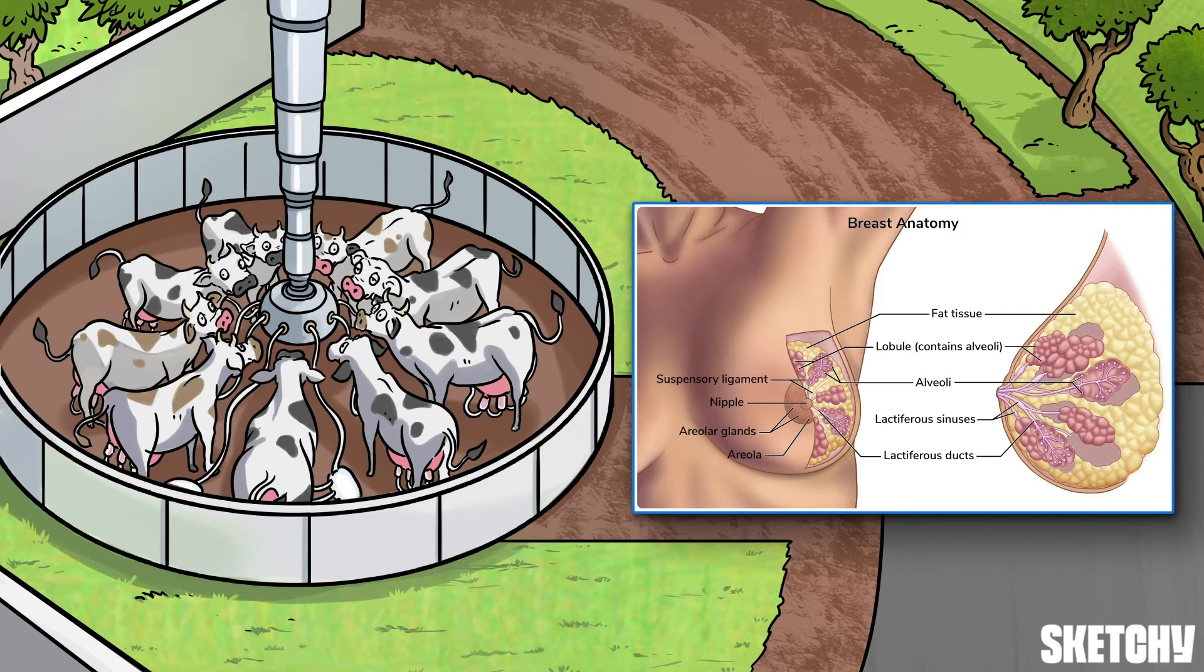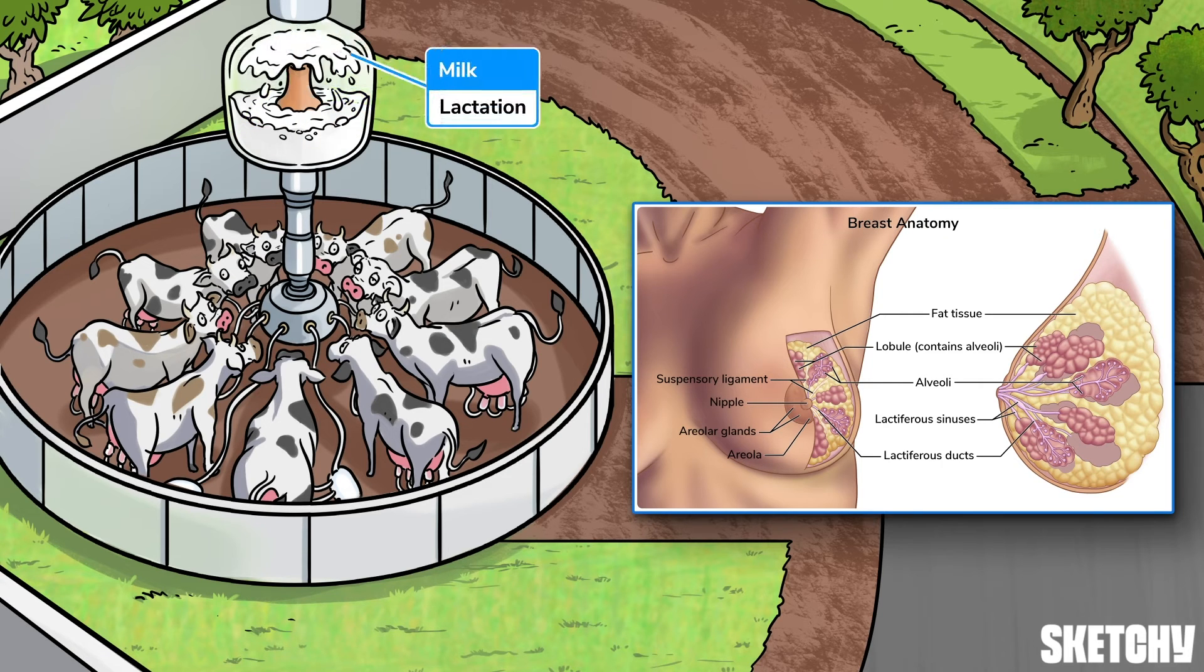Histologically, the breast contains both glandular and connective tissues. The glandular tissue, aka mammary glands, are responsible for lactation. The mammary glands consist of 15 to 20 lobes in each breast, which are further divided into lobules.